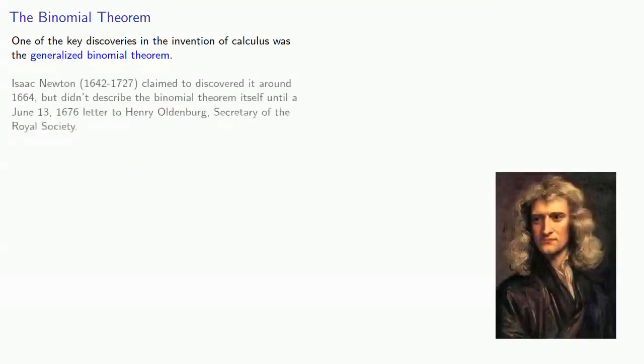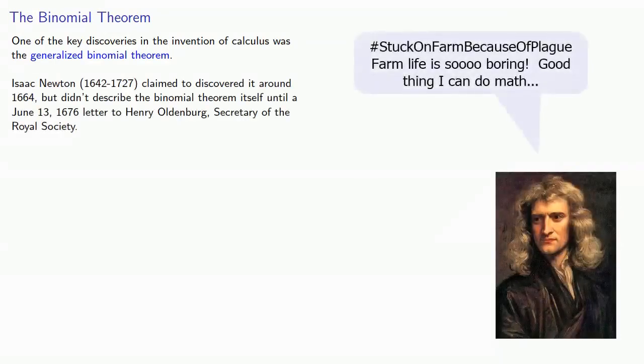One of the key discoveries in the invention of calculus was the generalized binomial theorem. Isaac Newton claimed to have discovered it around 1664, but didn't describe the binomial theorem itself until a June 13,